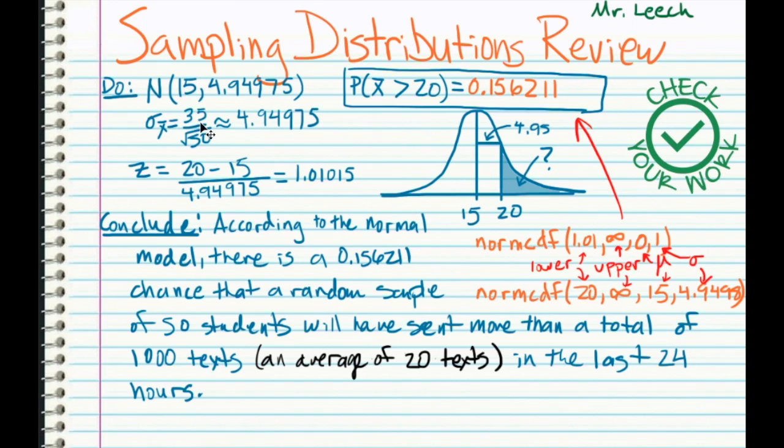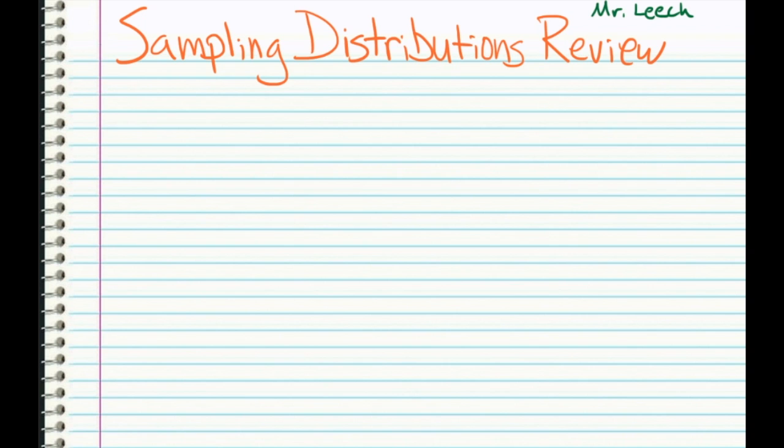Our normal model is centered at 15, with a standard deviation of 4.94975. We got that by taking our standard deviation, the sigma, and dividing it by square root of n. That actually gets pretty small. If you were to calculate a z-score, this is just over one standard deviation above the mean. You can either use the table or you can use the calculator. And the most accurate answer I can get using the calculator is 0.156211. So according to the normal model, there's about a 15.6% chance that a random sample of 50 students will have sent more than a total of 1,000 texts or an average of 20 texts in the last 24 hours. I hope this review of sampling distributions helped get you ready for whatever test or AP test you might be needing to take. Good luck.